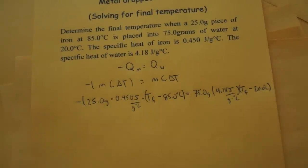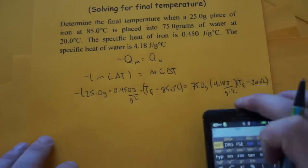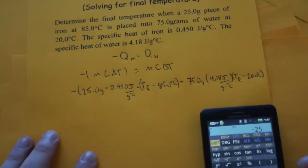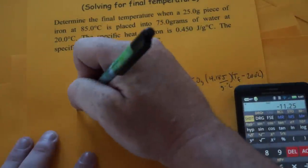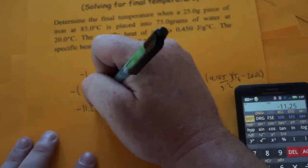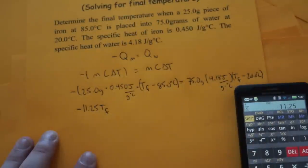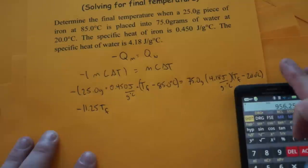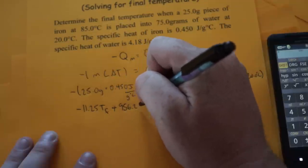Okay, so now what we have to do is we have to distribute. We have 25 but we'll make that negative times 0.45 and you get negative 11.25. And we'll get times that by Tf. And then we're going to multiply that times the 85 and we'll just get the other variable. That's positive 956.25.